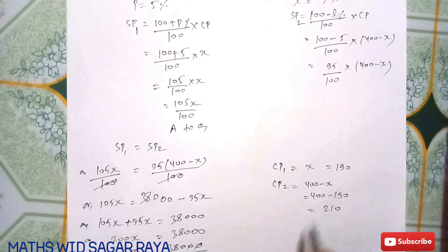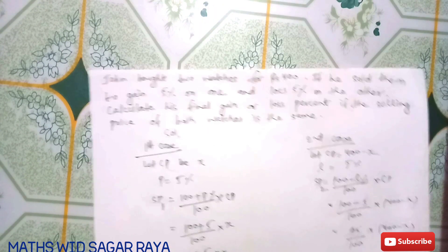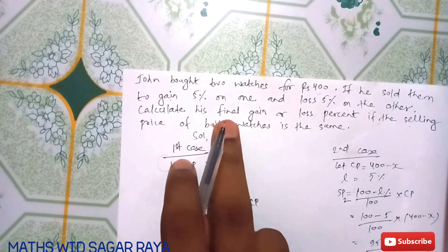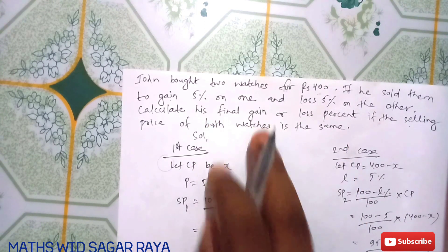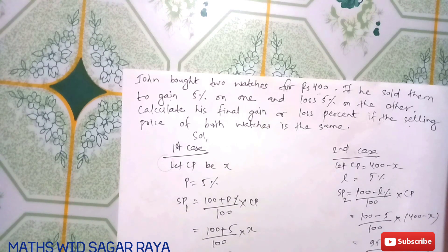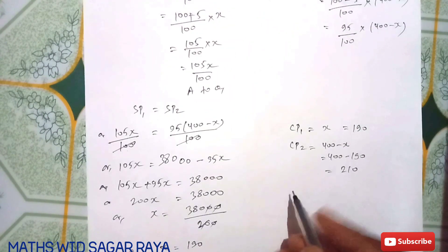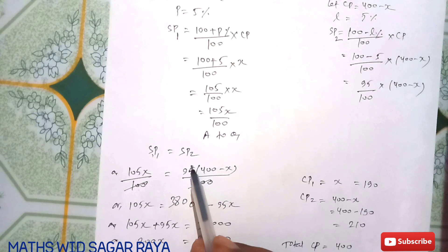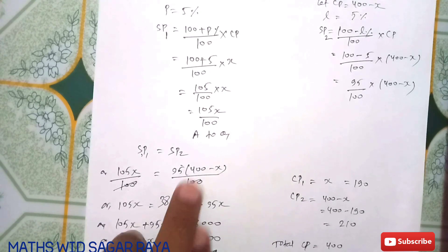To find the final gain or loss percent, we need total SP and total CP. Total CP is 400. SP1 and SP2 are equal, so we need to find the value of SP.